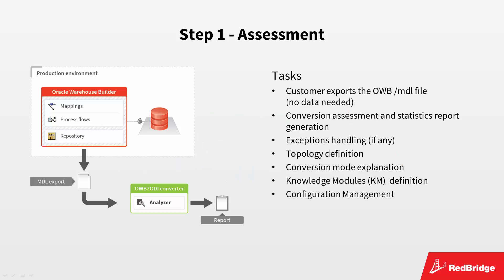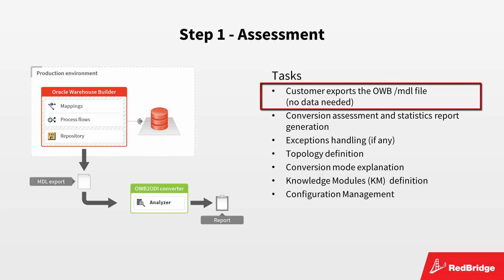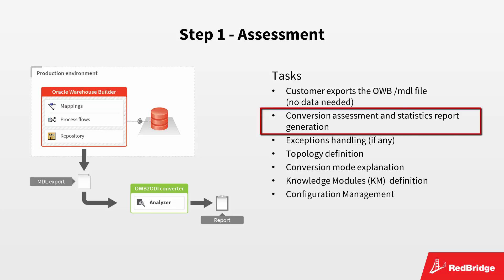The first step in the conversion process is the assessment step. During this step, we define the project's framework, we evaluate the consistency of the OWB project, and we define the conversion criteria. For this first step, we need you to provide us with an exported OWB MDL file, and based on that file, a conversion report will be generated.